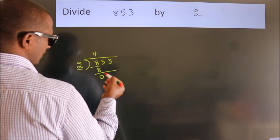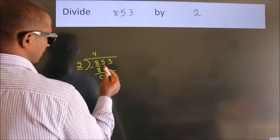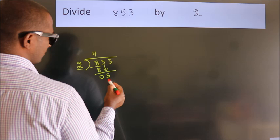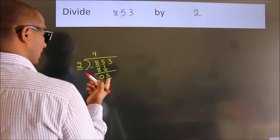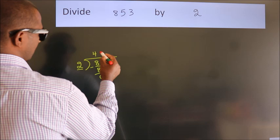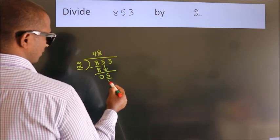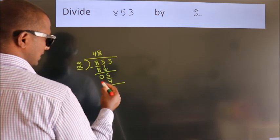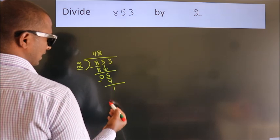After this, bring down the beside number. So 5 down. So 5. A number close to 5 in 2 table is 2 2s 4. Now we subtract. We get 1.